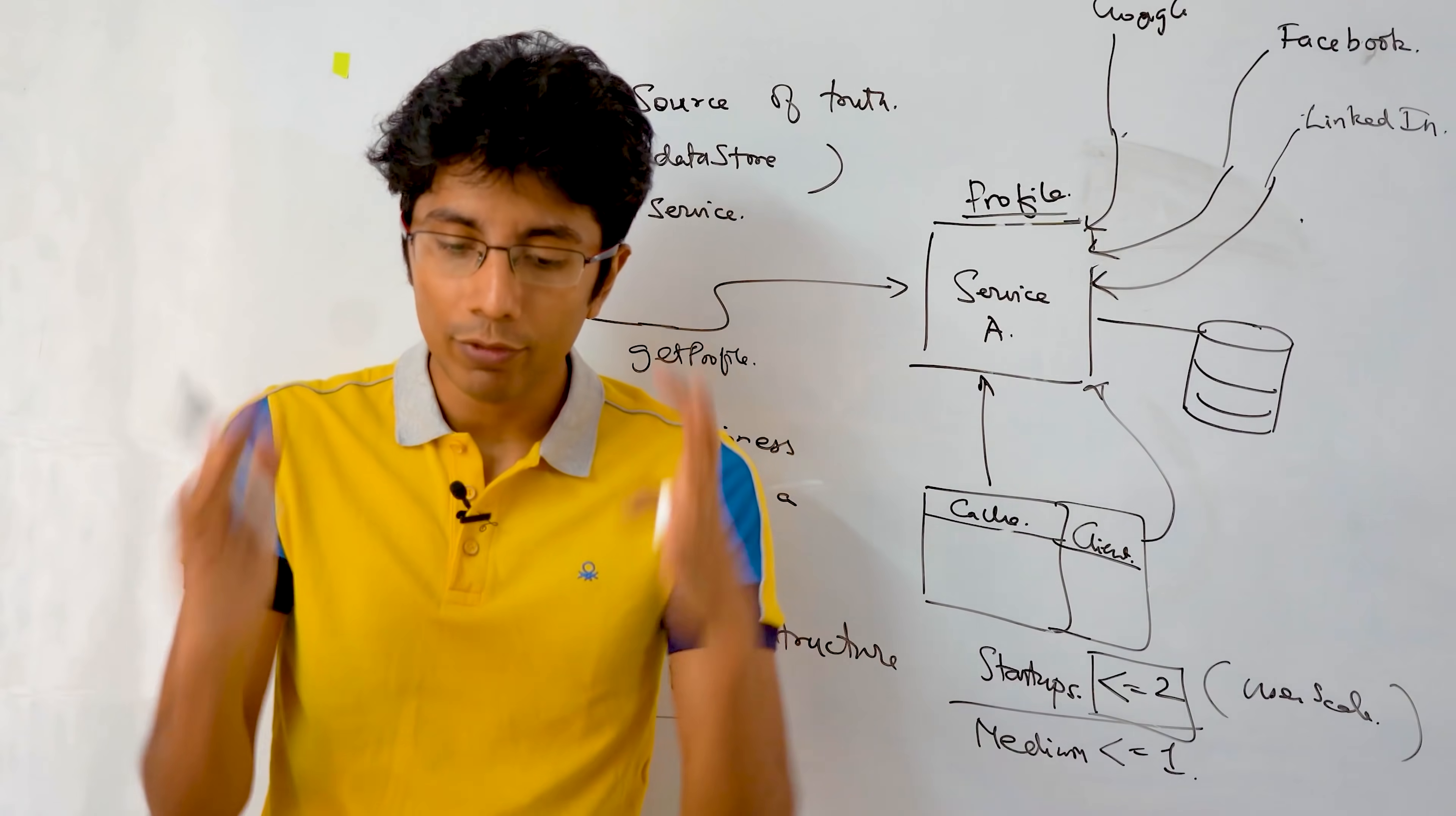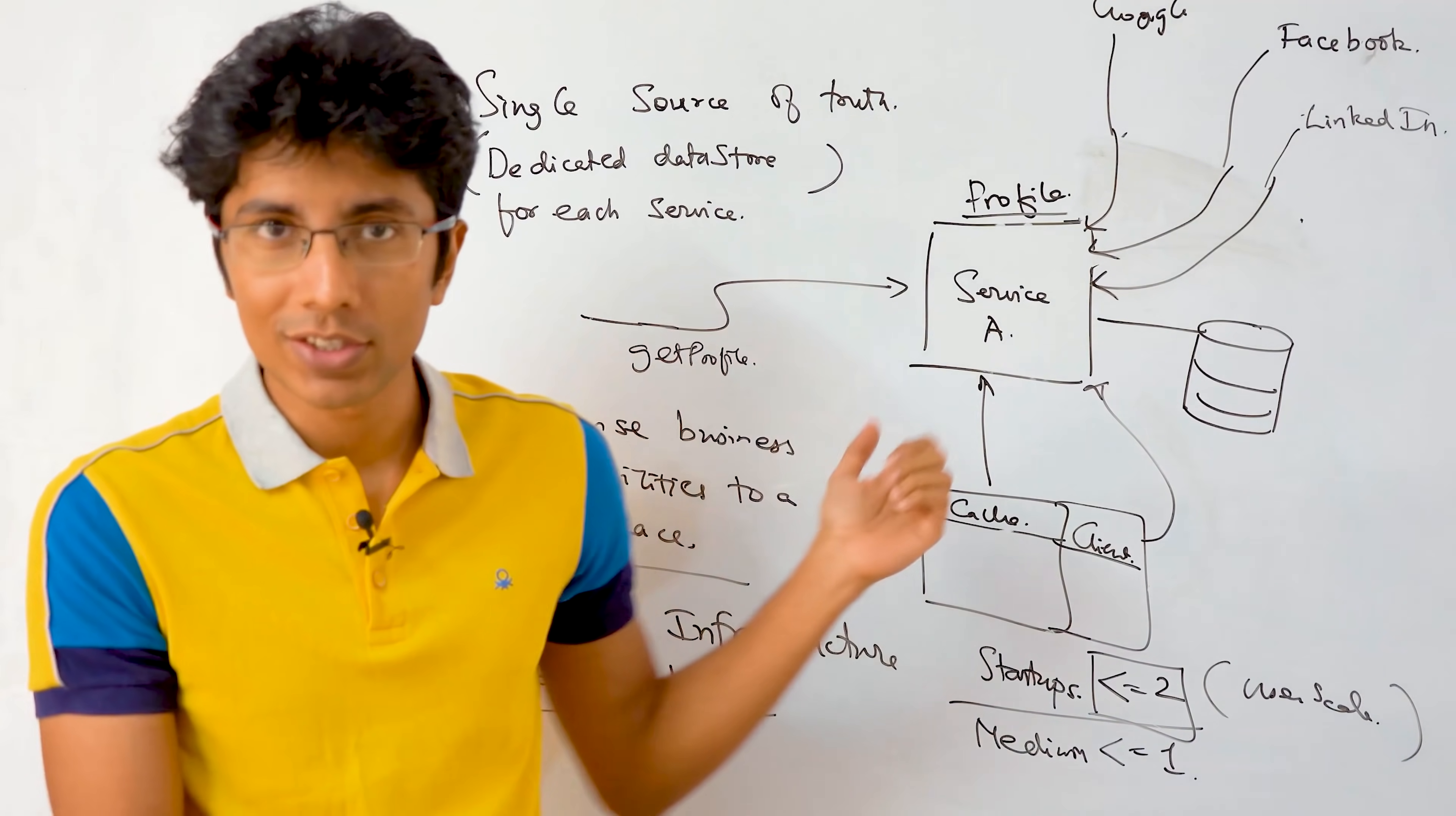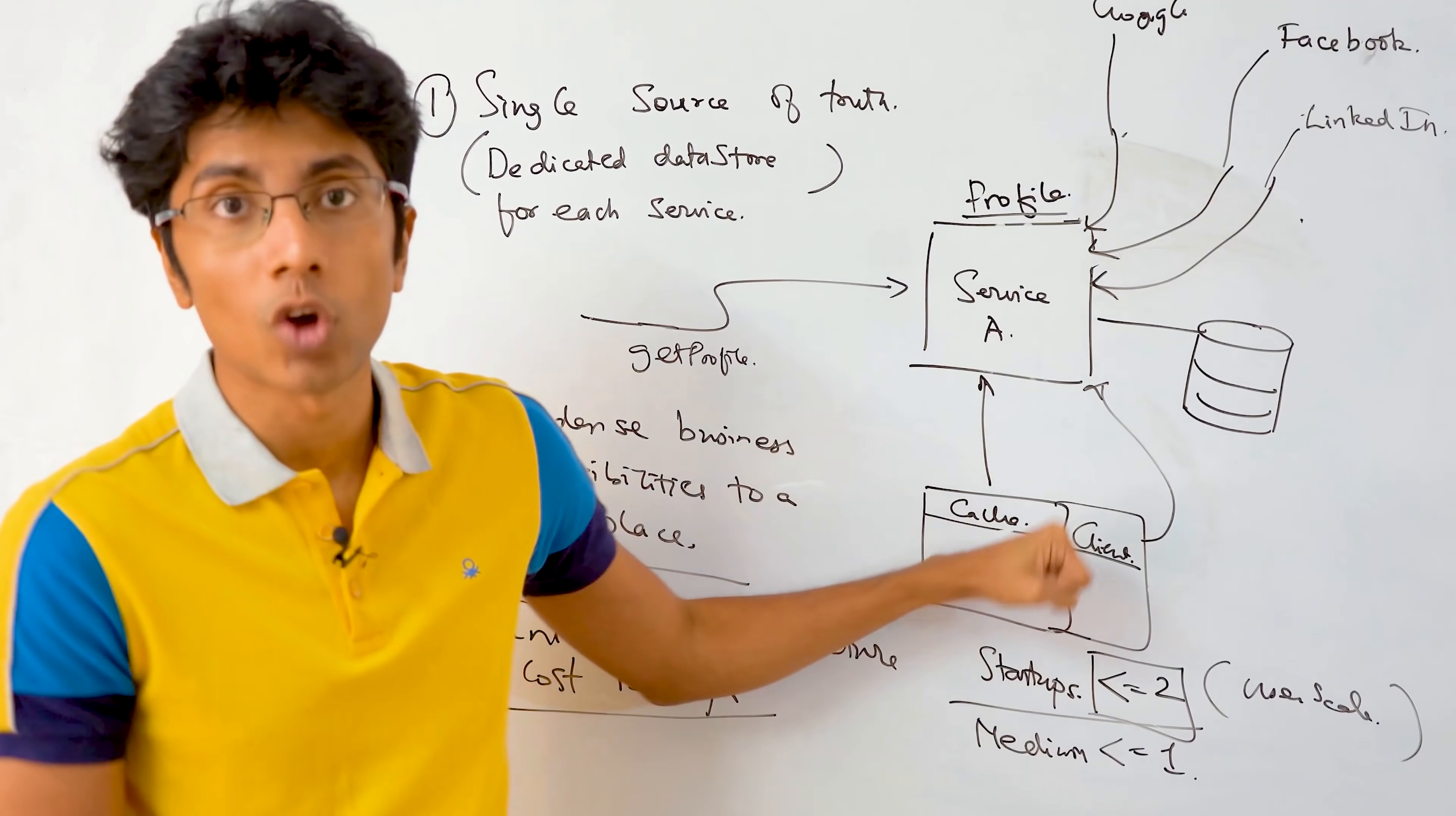So ideally you would have two people handling the session service, two people handling the payment service. And that way you avoid a single point of failure. If someone is absent or something happens, you know, they leave the organization, you still have one person who's taking care of that service. So you're not entirely dependent even as a business on them.